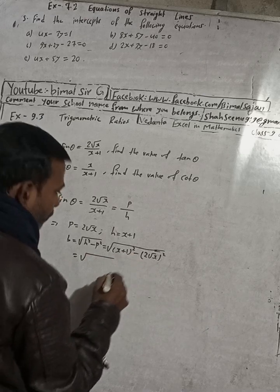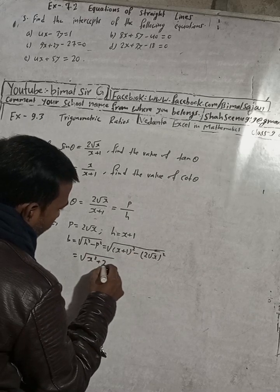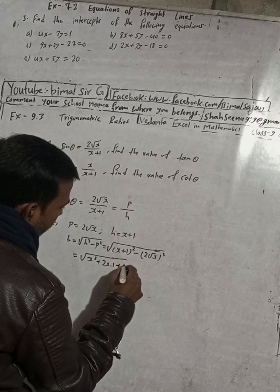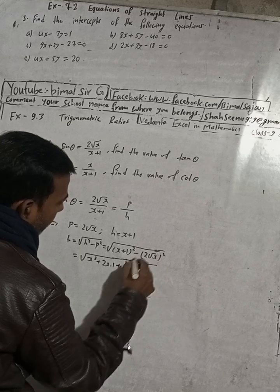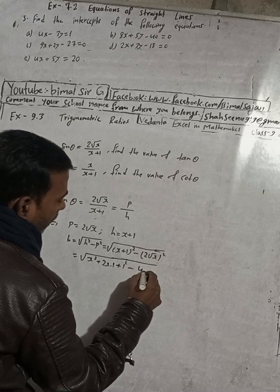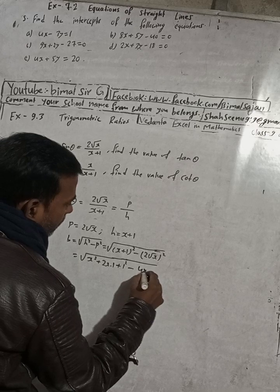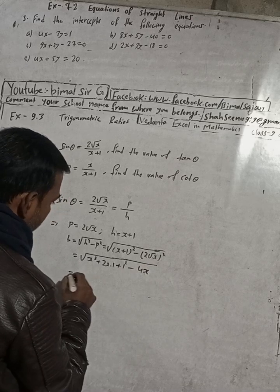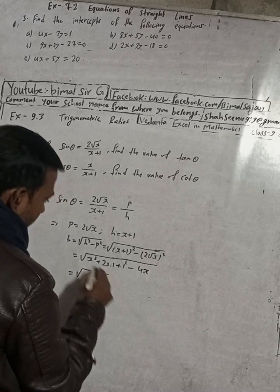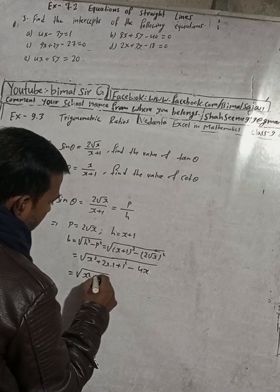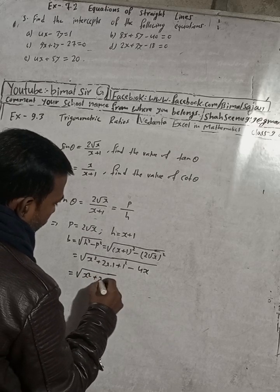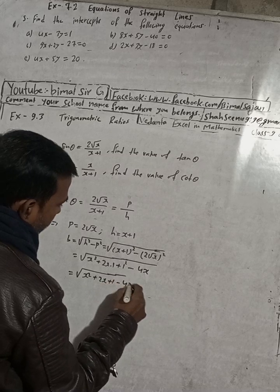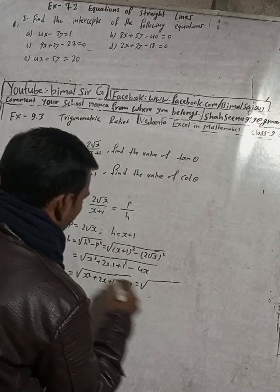x plus 1, x plus 2, x into this one, and then plus 1. x is 1, and then minus 2 squared is 4 into x. So 4x.